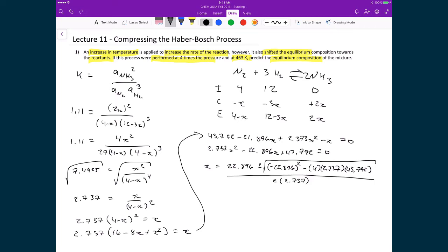So if I simplify this expression, I've got 22.896 plus or minus 6.697, and that's going to be divided by 5.474.